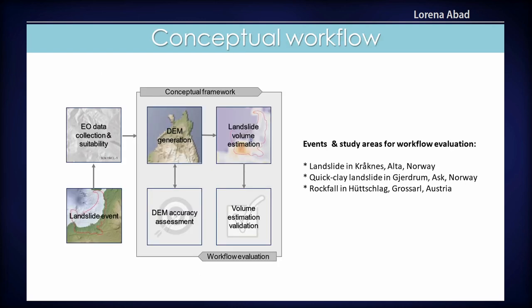The project itself is simple. We start with a landslide event — we're working with landslides at the Risk, Hazard, and Climate Lab. What we want to know is: from this landslide event, can I get digital elevation models from two passes of Sentinel-1? For that, we collect the data, check for their suitability, generate a DEM, and compute the landslide volume estimation, because we can get a DEM before the event and one after. In parallel, we do DEM accuracy assessment and validation.